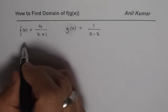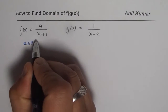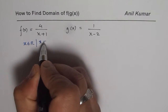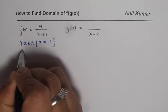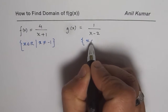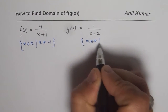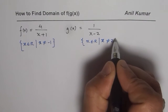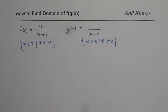For f(x), the domain is x belongs to real numbers, however x cannot be equal to -1. And for g(x), the domain is x belongs to real numbers and x cannot be equal to 2. That's the domain of these two functions.